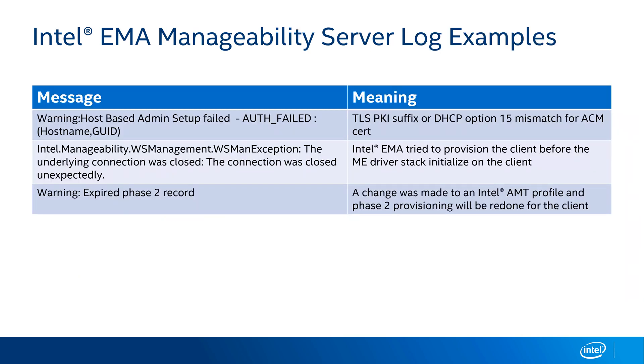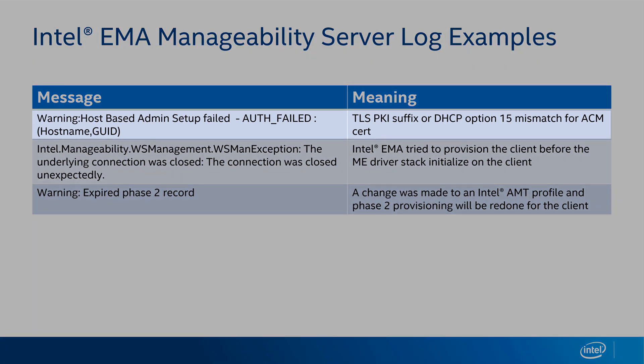Let's focus on the Intel Manageability Server Log. I've got three examples here of some fairly common messages you might see. First: warning, host-based admin setup failed, auth failed. This is something you're going to see if you try and configure systems in admin control mode using a certificate that does not match the DHCP option 15 that the system is seeing. Previously we talked about cases where your certificate may not match the DHCP option 15 the computer is getting from its local network, and talked about being able to go in and change that TLS PKI DNS suffix in the MEBX to address this kind of issue.